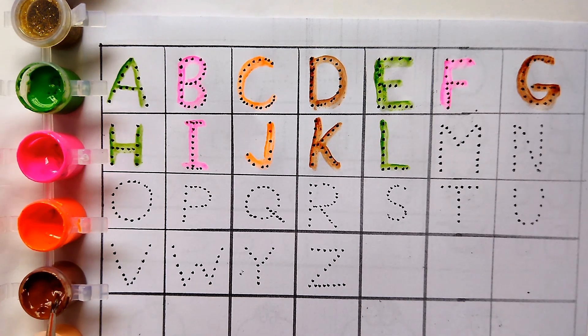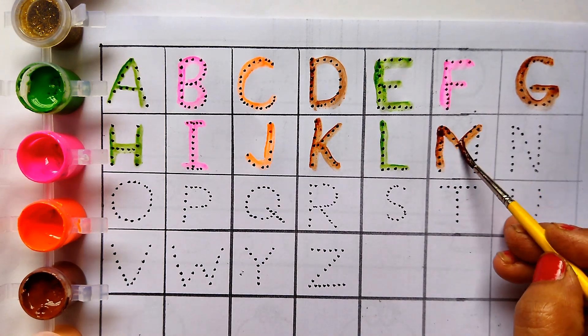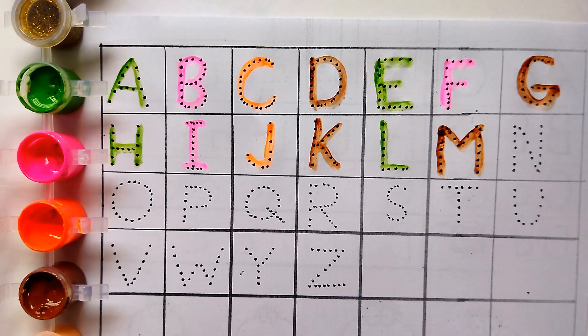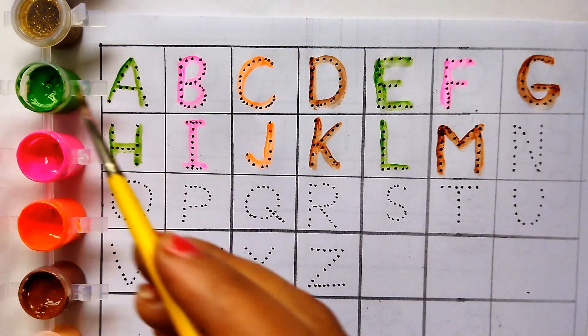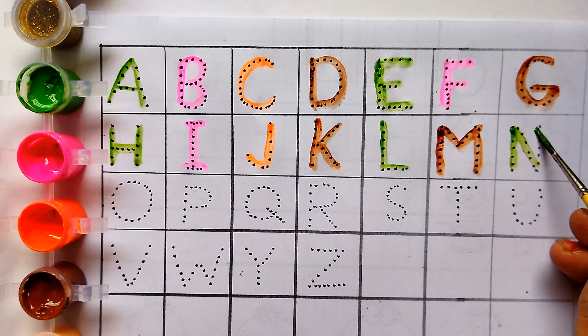Brown colour M. M for monkey. Green colour N. N for nest.